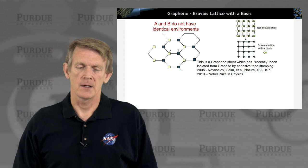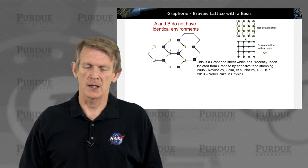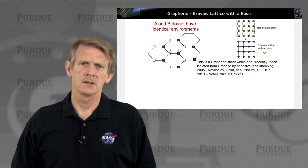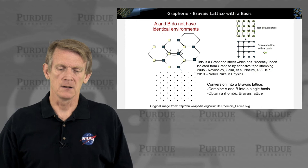But A and B have different chemical environments. A is bonding on this pictogram to the left in angles, top left and bottom left. And atom B is having bonds to the top right and the bottom right and connected to A. So A and B see different chemical environments, different geometries. So that by itself is not a Bravais lattice.